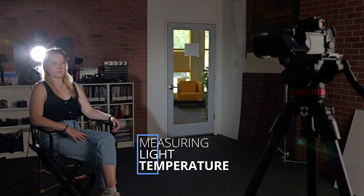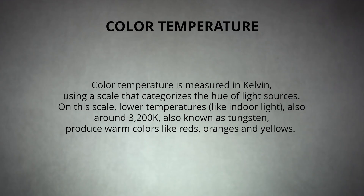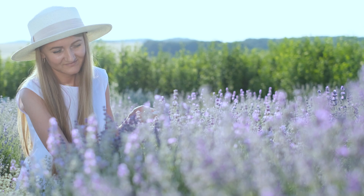If you're ready to enhance your videos, it begins with grasping color temperature. Color temperature is measured in Kelvin, using a scale that categorizes the hue of light sources. On this scale, lower temperatures like indoor light, around 3200 Kelvin, also known as tungsten, produce warm colors like reds, oranges, and yellows. Tungsten light evokes a cozy, intimate ambiance.